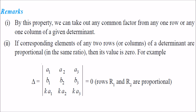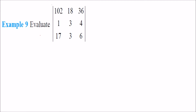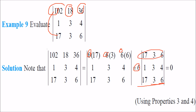By this property, we can take out any common factor from a row or column. Furthermore, if the corresponding elements of any two rows or columns are proportional, the determinant is 0 — because when you factor out k, the two rows become equal, and when two rows are equal the result is 0. For example, 102 = 6×17, and similarly other elements have factor 6, so we take 6 out. After factoring, the first row and third row become equal, so the determinant is 0.